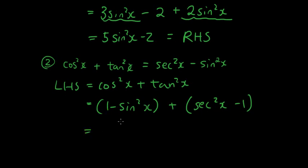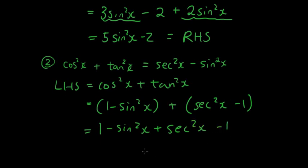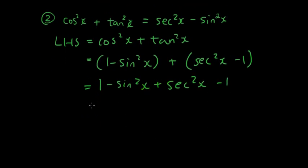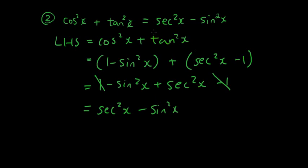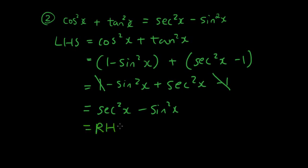I'm going to expand all this — well, I don't need to expand it, I can just get rid of the brackets. So it's 1 minus sin squared x plus sec squared x minus 1. This turns into 1 minus 1 equals 0, so it's just sec squared x minus sin squared x, which is equal to the right hand side. Left hand side equals right hand side. Proven.